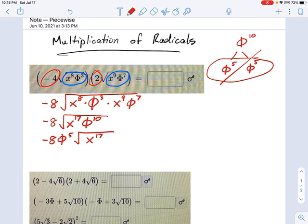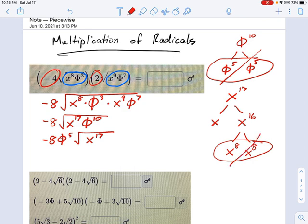And what's x to the 17th? x to the 17th is just x times x to the 16th. And x to the 16th is x to the 8th times x to the 8th. So we've got another pair. We can pop out one of those x to the 8ths, and this becomes negative 8 times phi to the 5th power times x to the 8th power. But there was a little x left behind in the radical sign, so this is as far as we can simplify this problem.